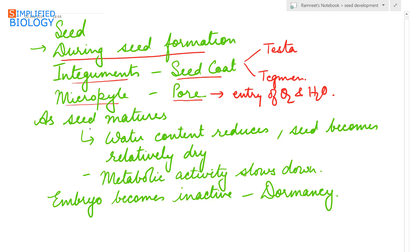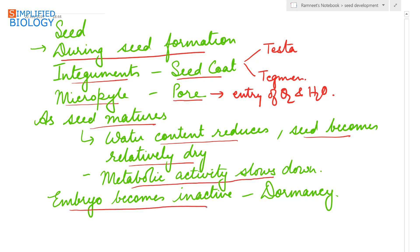As the seed matures, the water content reduces and the seed becomes relatively dry. Due to this, metabolic activity slows down and the embryo becomes inactive, entering into a state of dormancy. The seed being dormant is very important for agriculture.